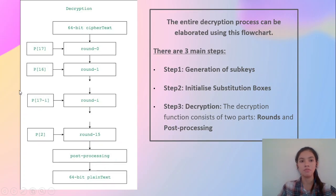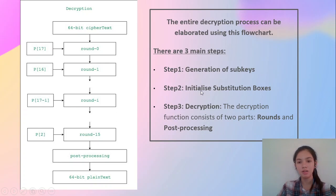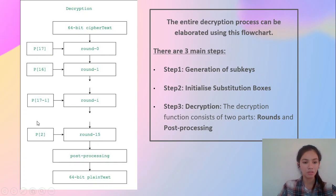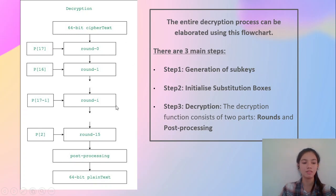This is a similar flowchart but for decryption. The first two steps are common: generation of subkeys (18 subkeys needed) and initialization of substitution boxes. The third stage is decryption, again consisting of rounds and post-processing. The only difference is that the subkeys are used in reverse — for round 0 we use P17, the last subkey. After 16 rounds, the post-processing stage gives the 64-bit plain text converted from the 64-bit ciphertext.